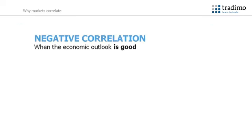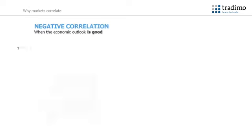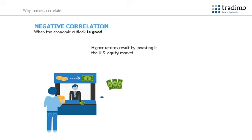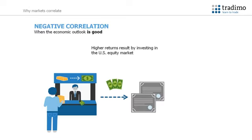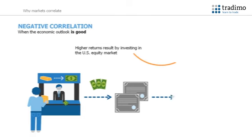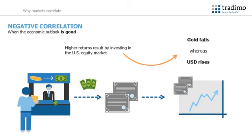When the economic outlook is good, however, investors may feel they can make higher returns by investing in the US equity market, resulting in less desire for gold. Consequently, capital flows away from gold and into the US dollar, resulting in a negative correlation.